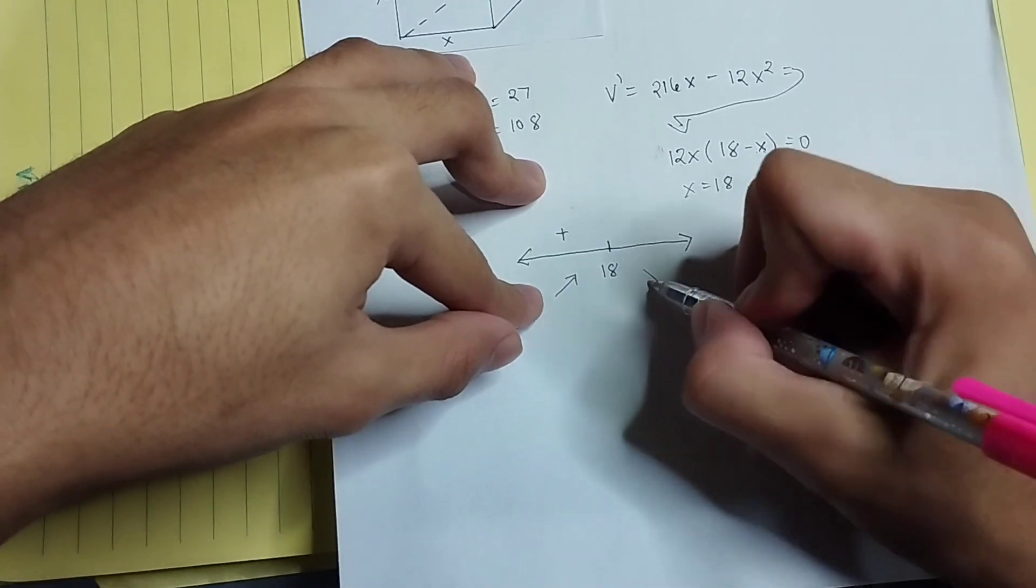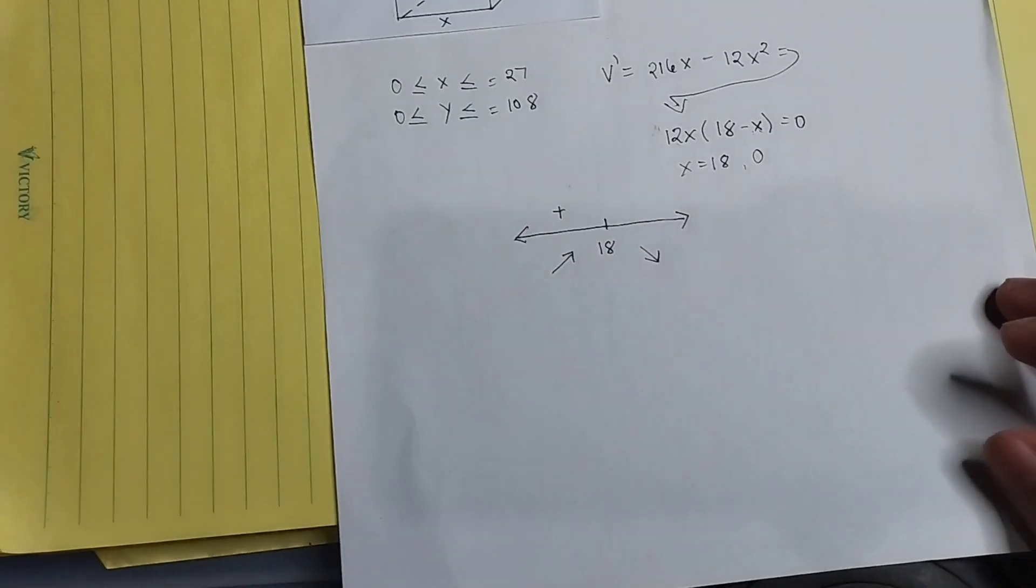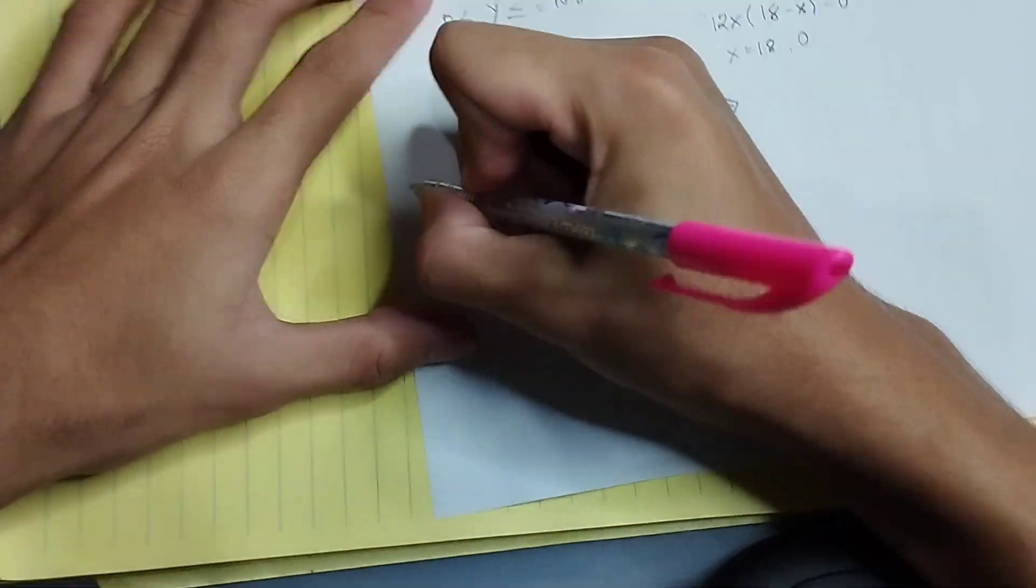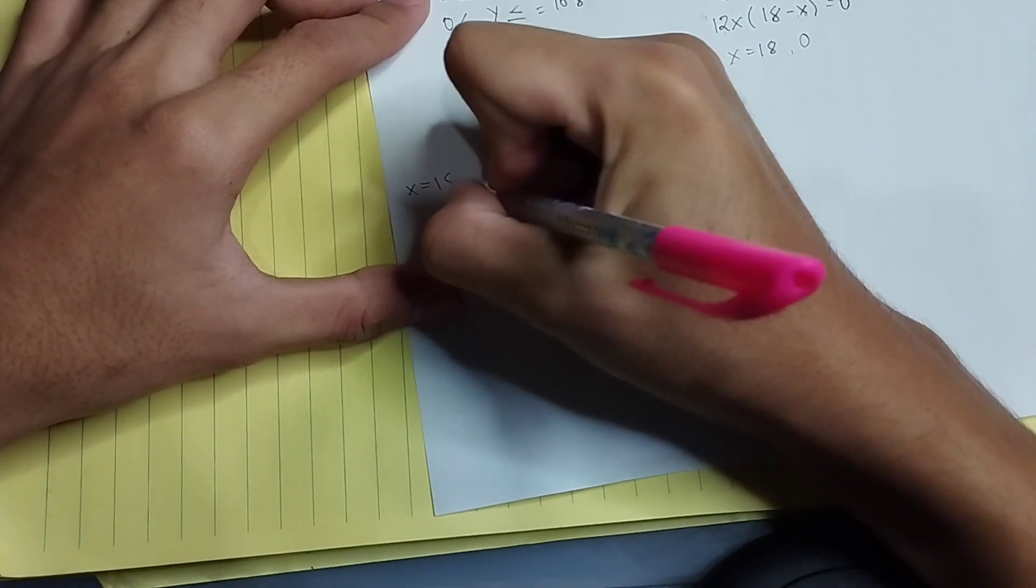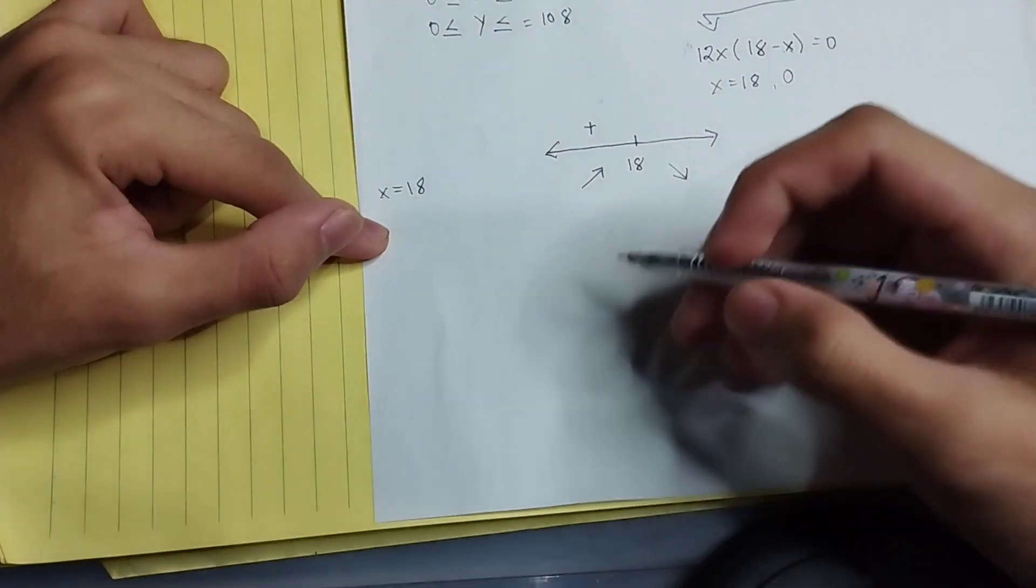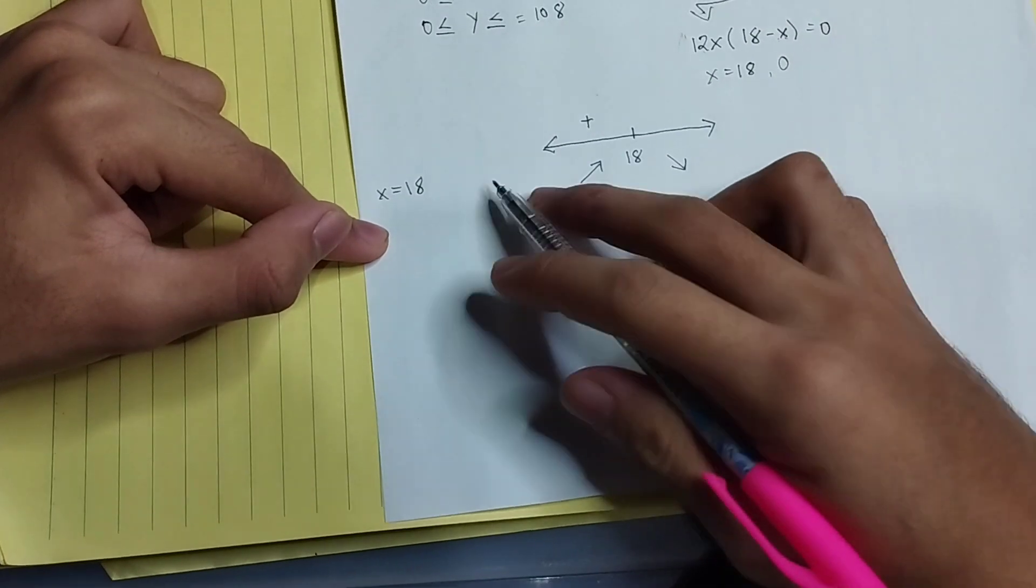And then we can say that our x equals 18. After we get that critical value 18, we can say x equals 18, and now we can substitute x equals 18 into our y.